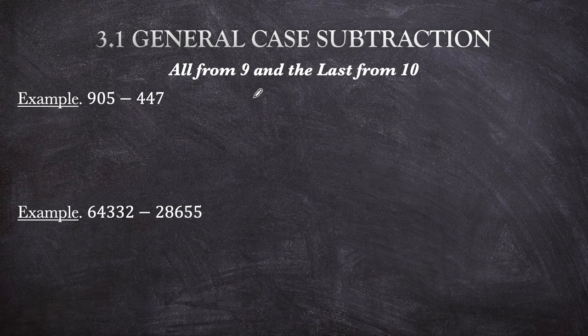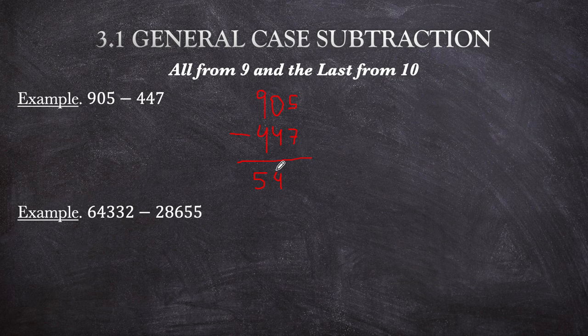Next example: 905 minus 447. So: 9 minus 4 is 5; 0 minus 4 cannot be, so that's bar 4; 5 minus 7 gives bar 2. This equals 5 bar 42, which applying the sutra gives 4, 5, 8. Answer: 458.